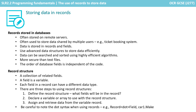We then looked at records stored in databases. This is often stored on remote servers, often used to store data shared by many users, for example a ticket booking system. Data is stored in records and fields, using advanced data structures to store data in an efficient way, and very efficient algorithms to search and sort data executed on the servers. This is much more secure than storing data in simple text files, and the order of the fields in the database is now independent of the code.